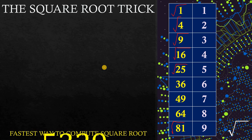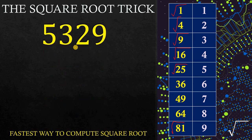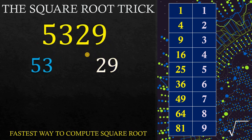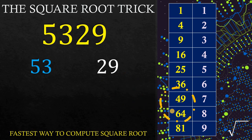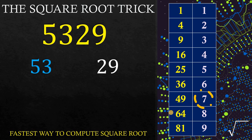Let's say for example we need to get the square root of 5,329. To get the square root, what we're going to do is to divide the digits by 2s from right to left. We are now ready to get the first digit and the second digit of our answer. For the first digit, we will use 53. Seeing 53, we know 53 is between 49 and 64. What we're going to do is to choose the smaller digit, and this corresponds to 7. Therefore, 7 is our first digit.